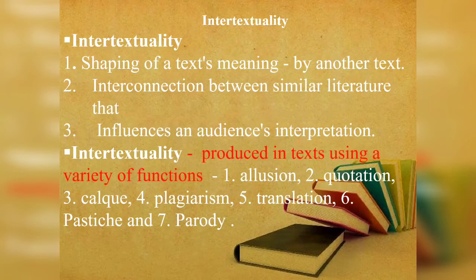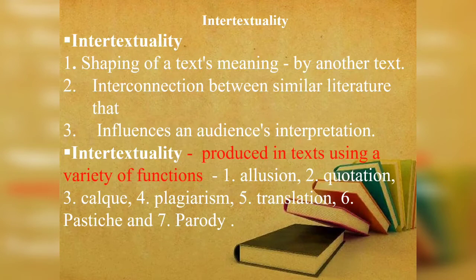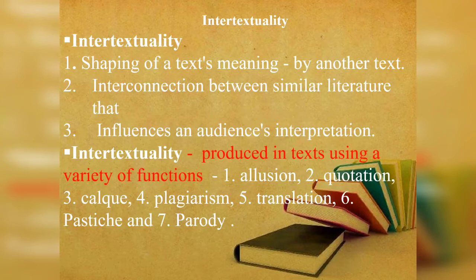Allusion means reference from other texts taken and incorporated into our literary text. Quotation is taking quotations from other sources and introducing them into our literary work. Calque is word-for-word translation from one language to another introduced into our literary text. Plagiarism refers to copying or taking sources from other texts without giving acknowledgement. Translation refers to translating a particular line from another language and incorporating it into our text. Pastiche refers to imitating the structure and pattern of another text. And parody refers to imitation of the structure and pattern of another text in order to mock or ridicule. Through these seven functions, intertextuality is used in text.